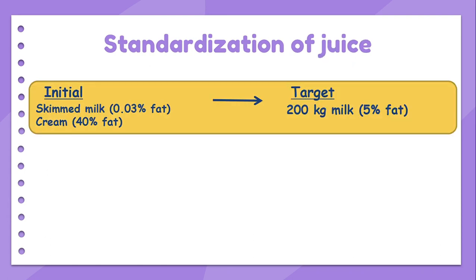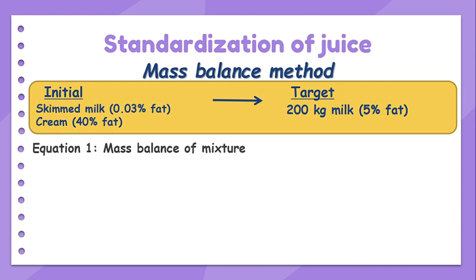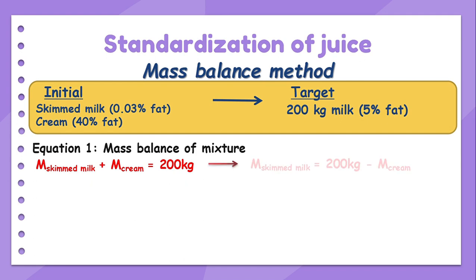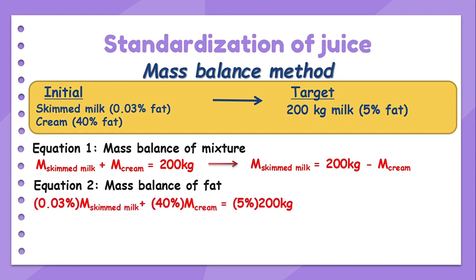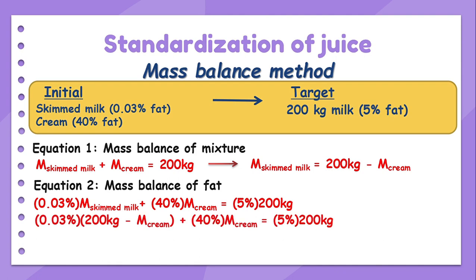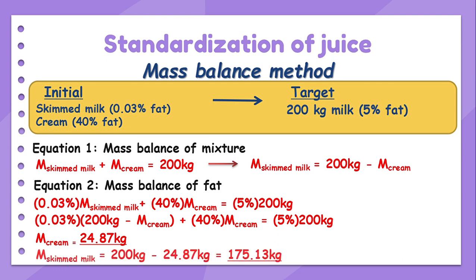We can also use a mass balance equation to solve this kind of calculation. First, write down the mass balance equation of the mixture: the sum of mass of skimmed milk and mass of cream equals 200 kilograms — the final mass of milk we want. The second equation is the mass balance of fat: multiply each mass by its percentage of fat. By substituting the first equation into the second equation, we get the mass of cream required, then substitute that into the first equation to get the mass of skimmed milk required.